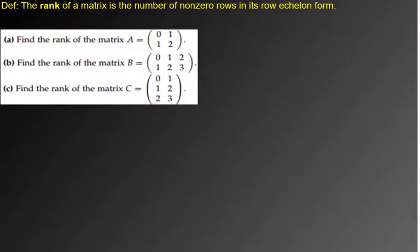So really important definition here. The rank of a matrix is the number of non-zero rows in its row echelon form.